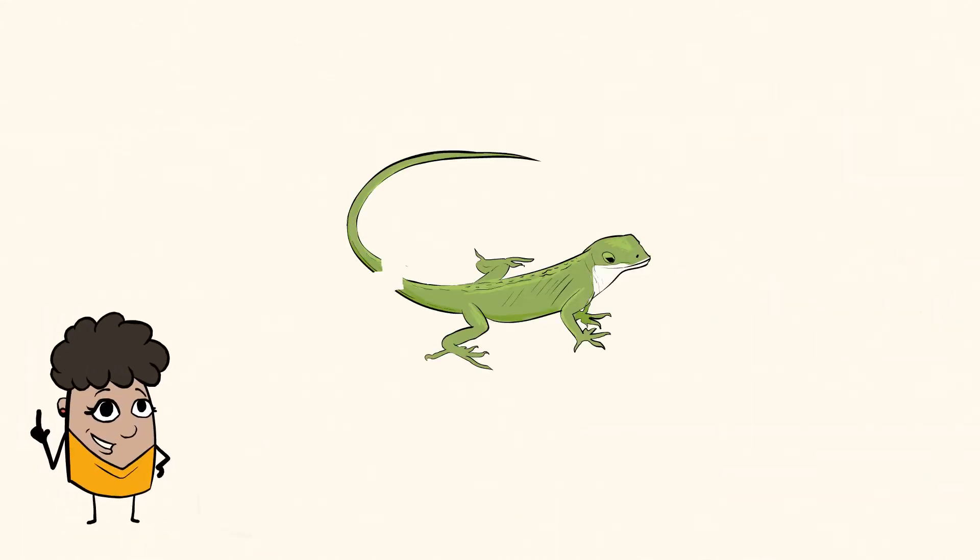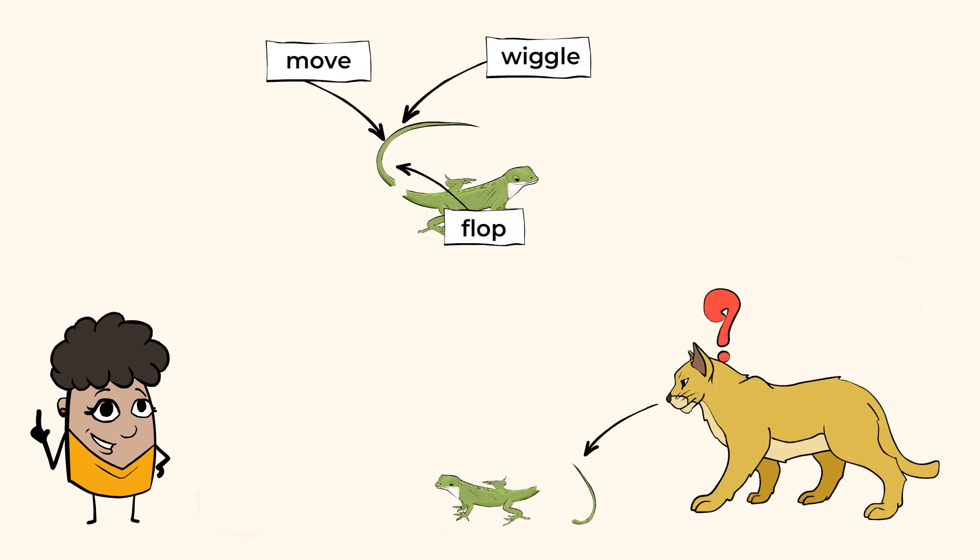There are little things called nerves within the lizard's body that are still firing and communicating with each other. In fact, sometimes the tail will continue to move, wiggle, and flop around for up to half an hour by itself. It kind of looks like a worm. And that actually distracts the lizard's predator and gives the lizard plenty of time to escape.